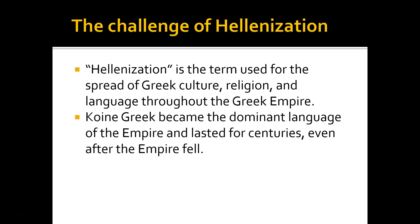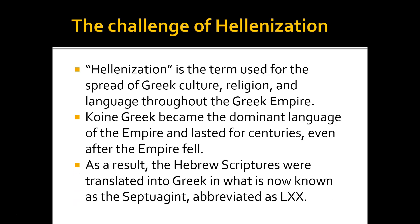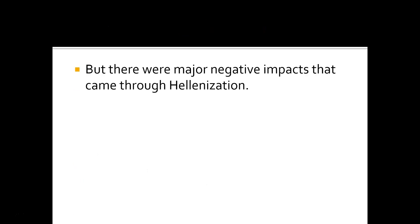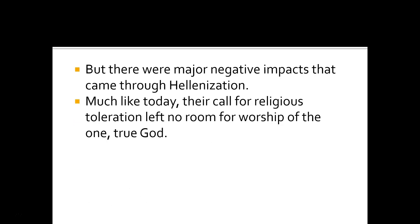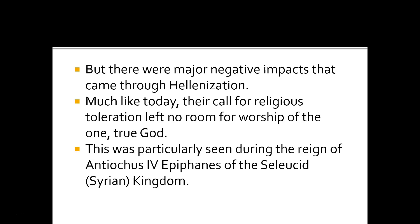As a result, the Hebrew scriptures were also translated into Greek, probably in Alexandria, Egypt, in what is now known as the Septuagint, abbreviated as LXX. But there were major negative impacts that came through Hellenization. Much like today, their call for religious toleration in the Greek Empire left no room for worship of the one true God. This was particularly seen during the reign of Antiochus IV Epiphanes of the Seleucid northern Syrian kingdom and its impact upon Jerusalem and Judea.